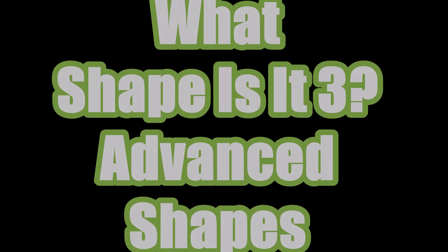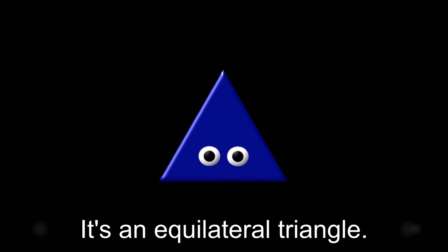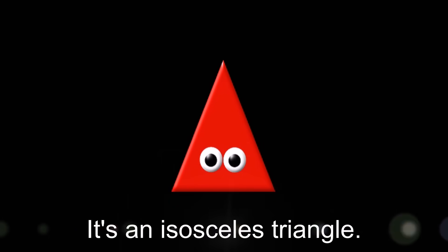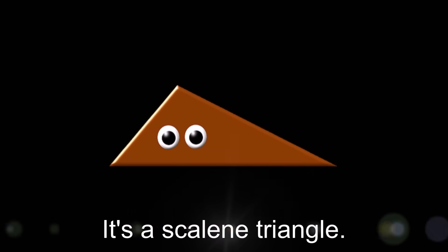Advanced Shapes. What shape is it? It's an equilateral triangle. What shape is it? It's an isosceles triangle. What shape is it? It's a scalene triangle.